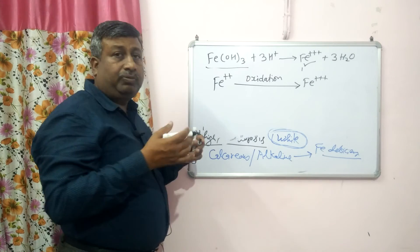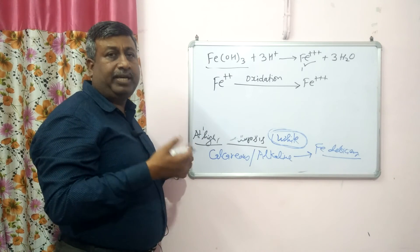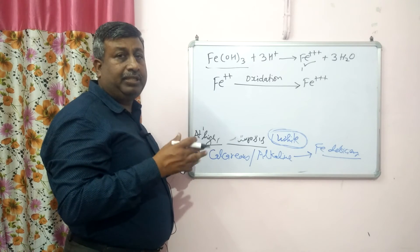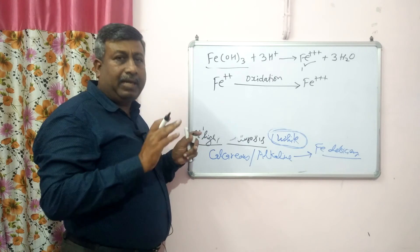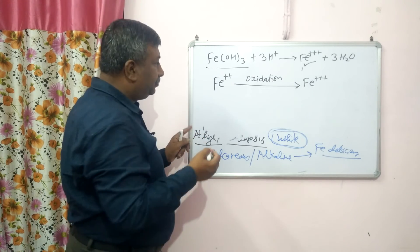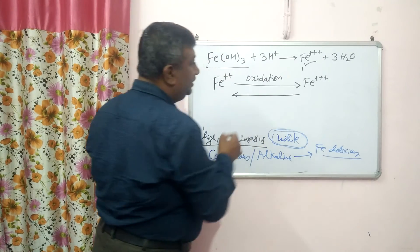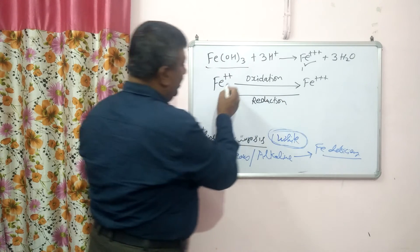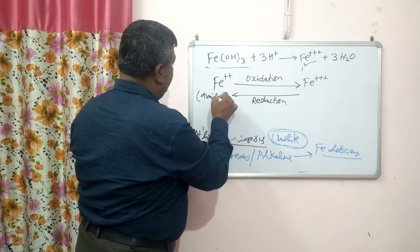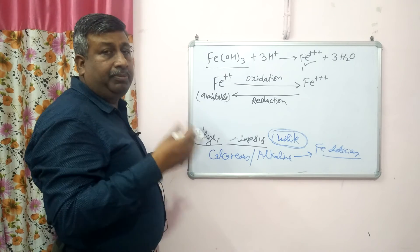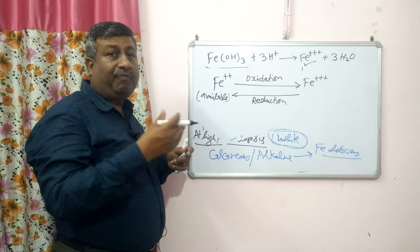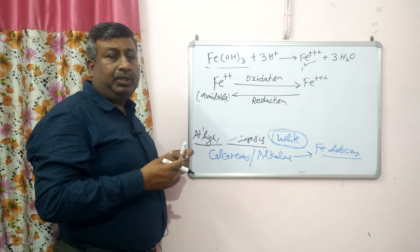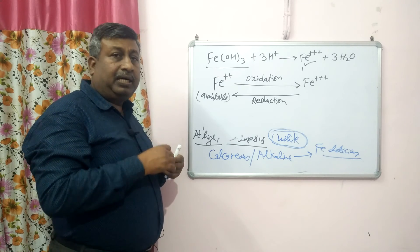Under reduced conditions — such as waterlogging or tillage — ferric is converted back to ferrous, which is the available form. Reduction is the gain of an electron. So under reduced conditions, ferric converts to ferrous, and iron availability increases.